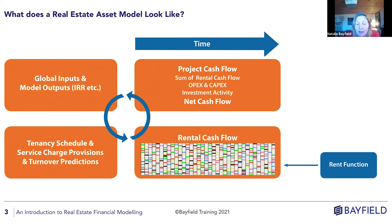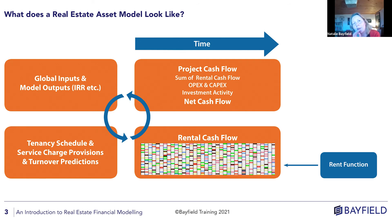That one formula - the rent function - has to be copied across and down the rental cash flow, picking up all of that information. You have to model for a whole array of different lease features and test them for every point in the rental cash flow. If you've looked at real estate financial models, you might be scrolling down a spreadsheet thinking a number looks okay, and then you hit a formula that's lines and lines long and just give up.